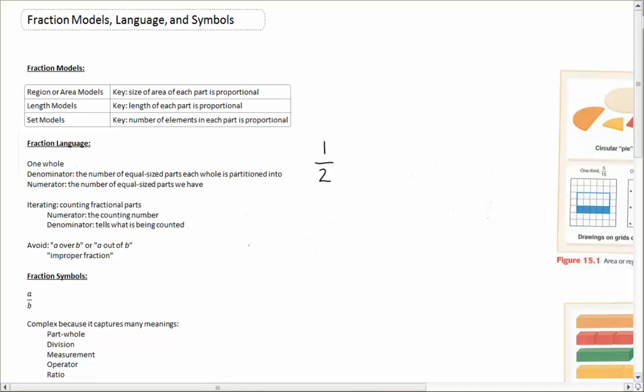We can help kids learn this language and get comfortable with the meaning of these things by iterating with them. In other words, counting fractional parts. For example, if I took a pizza, cut it into eight parts, and we say, okay kids, this pizza is now cut into eighths.